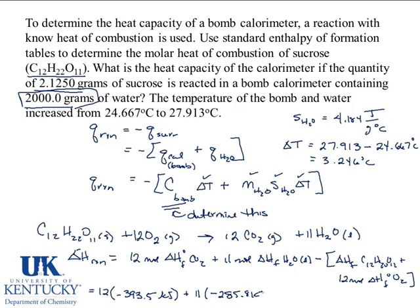Minus one mole, that's how much sucrose we have, times, and if we look up the value for sucrose, it is 2,221.7 kilojoules per mole times the moles. So all of this combined will give me the delta H of the reaction, and I'll get the number written down here, negative 5,644 kilojoules.